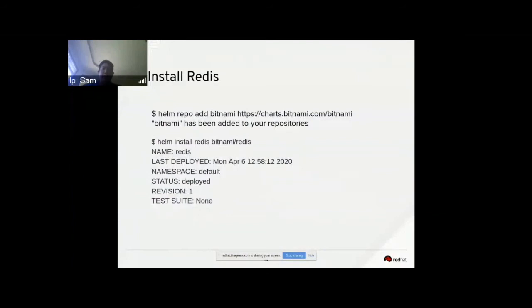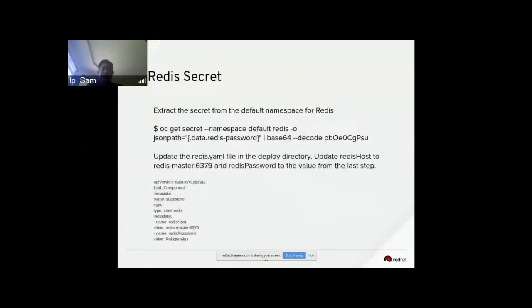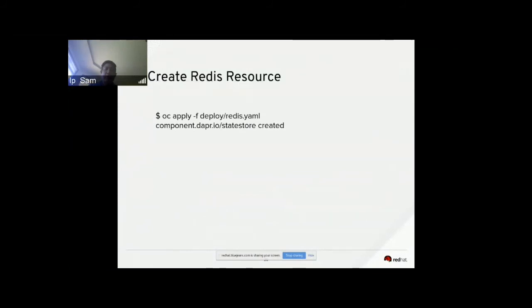To install Redis, call helm repo add and then helm install redis to install Redis into your namespace. Redis also has a dependency on a secret, so extract the Redis secret from the default namespace using oc get secret, specify the namespace, and extract the JSON path for data.redis-password. Once you have the password, update the Redis YAML file in the deploy directory, setting the Redis host to redis-master:6379 and the password from the previous step. Then call oc apply -f on the YAML file to make sure the component gets created.